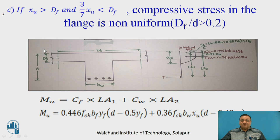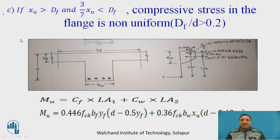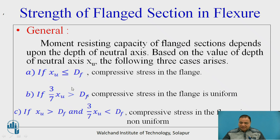Xu less than Df, Xu greater than Df and 3 by 7 Xu also greater than Df. To identify this particular value you are having Df by D. If Df by D is less than 0.2 then we get case B. If Df by D is greater than 0.2 then we get case C. First of all we have to equate the compressive force to tension force, that is C must be equal to T.